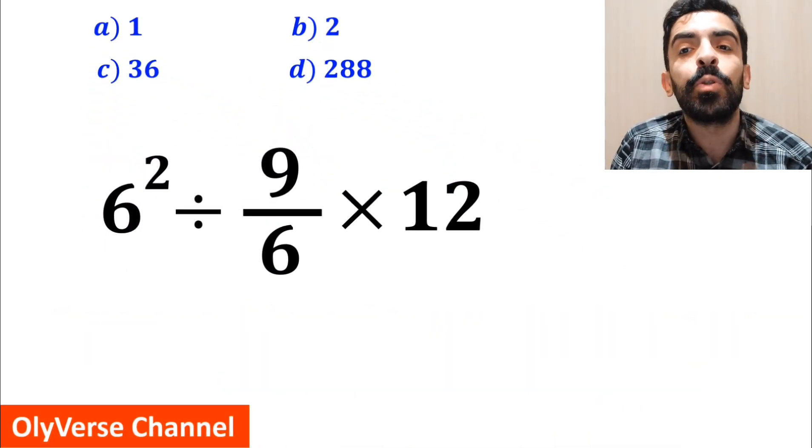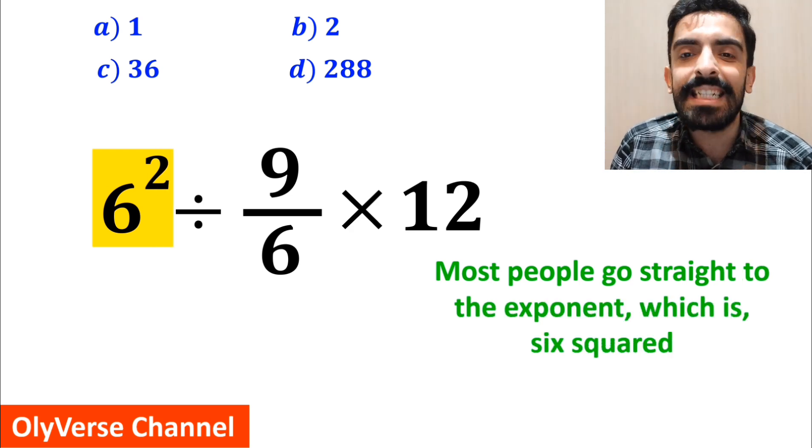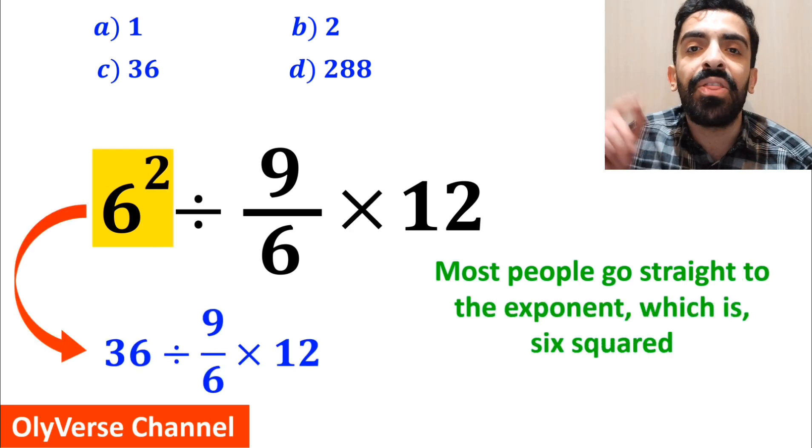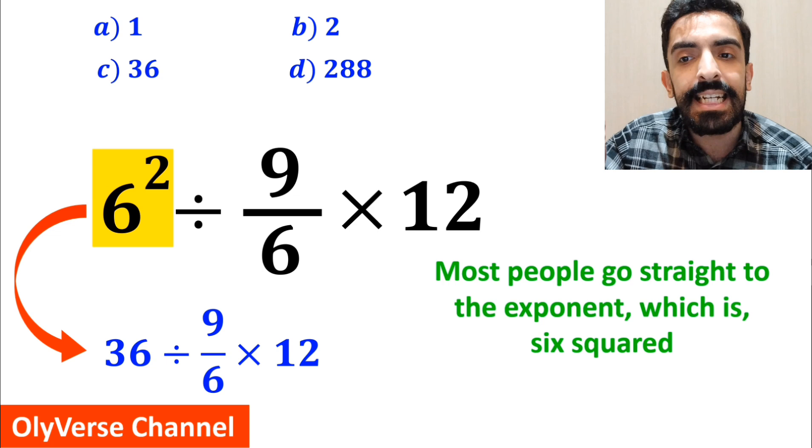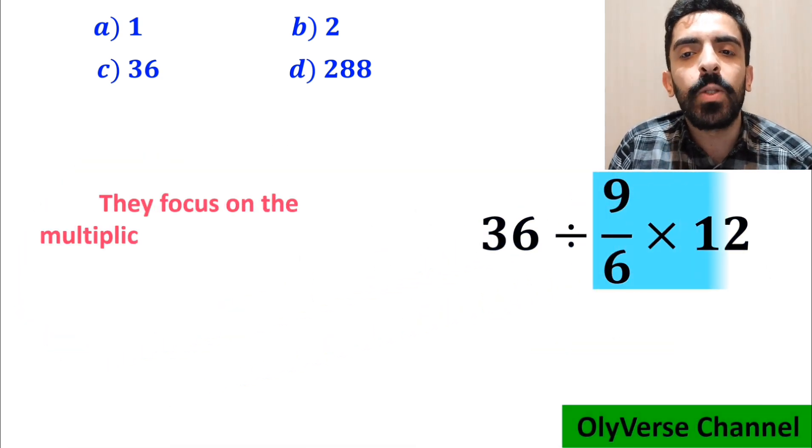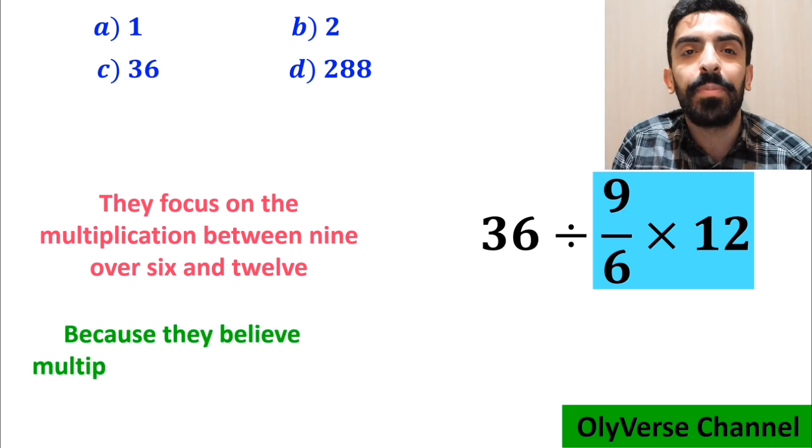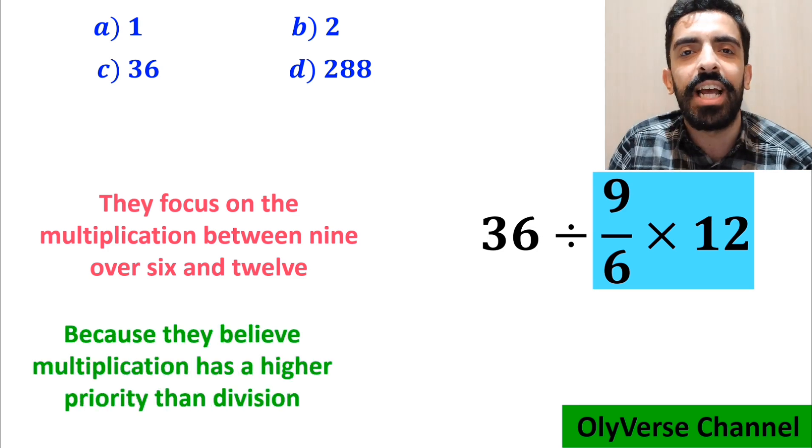And the first step to solve this question, most people go straight to the exponent, which is 6 squared, and write this expression as 36 divided by 9 over 6 multiplied by 12. And the next step, they focus on the multiplication between 9 over 6 and 12, because they believe multiplication has a higher priority than division.